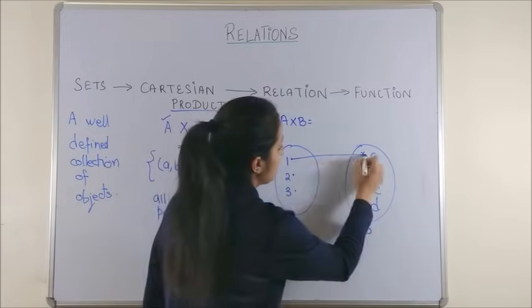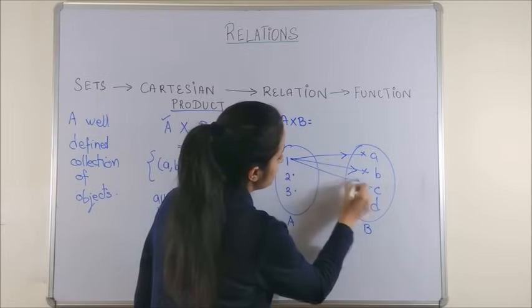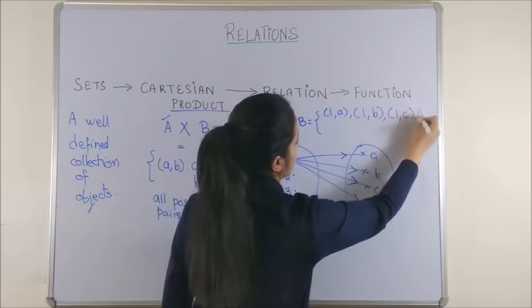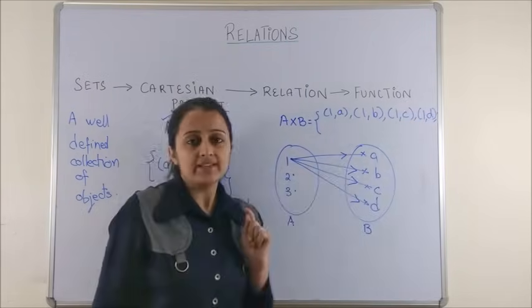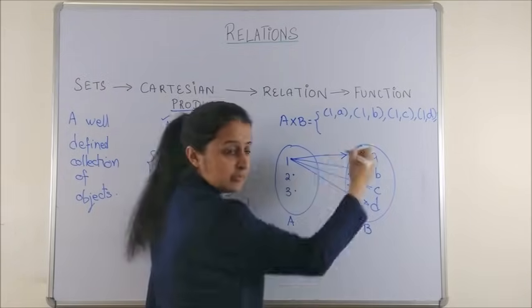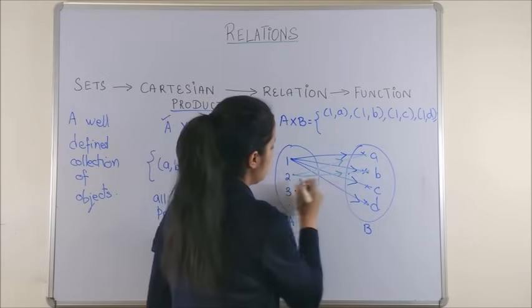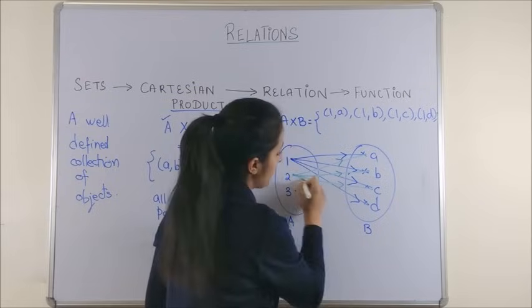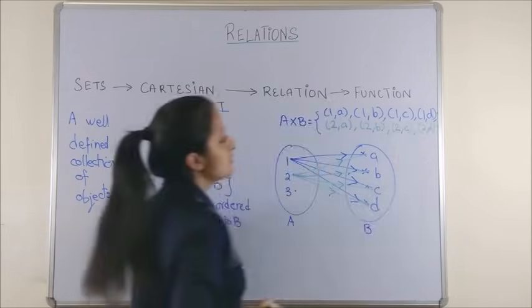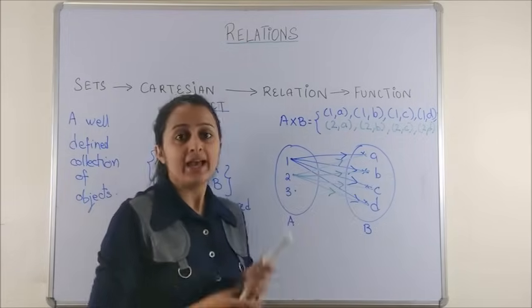Now if I talk of 1, it could be connected with A, 1 could go to B, 1 could go to C, 1 could go to D. So this is how we write this in the Cartesian product. Similarly, beginning with your element 2, it could be marked to A, again B, C as well as D.